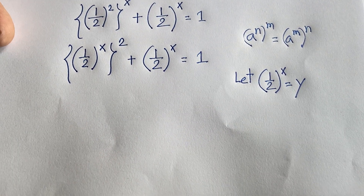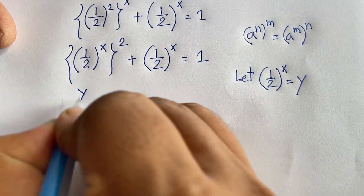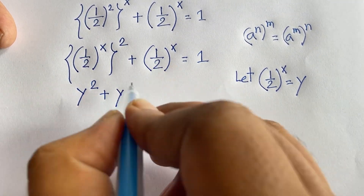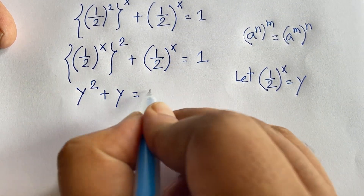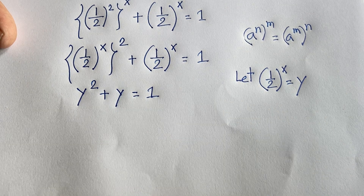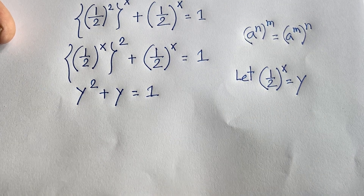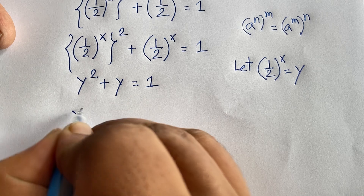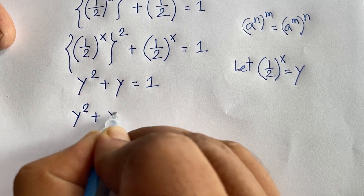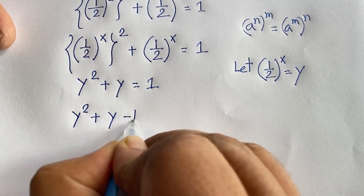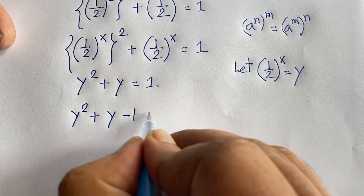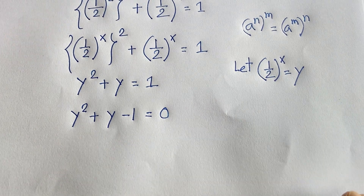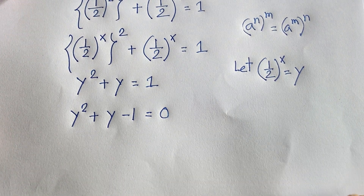Adding y squared plus y — setting y = (1/2)^x — we get y² + y = 1. Moving 1 to the left side, it becomes y² + y - 1 = 0.